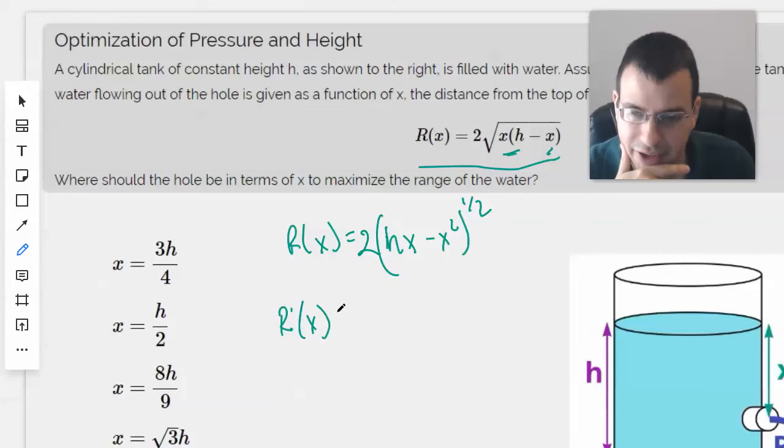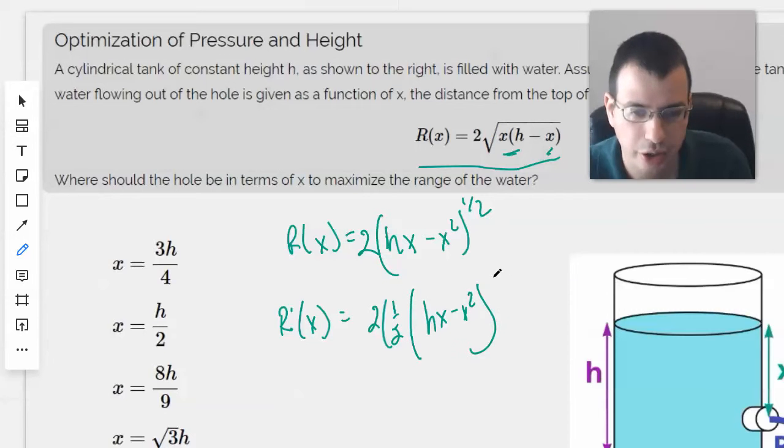R prime of x equals, so we'll do 2 times 1 half times h x minus x squared to the negative 1 half, times the derivative of the interior, which will be h minus 2x.